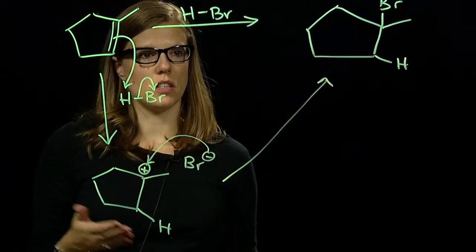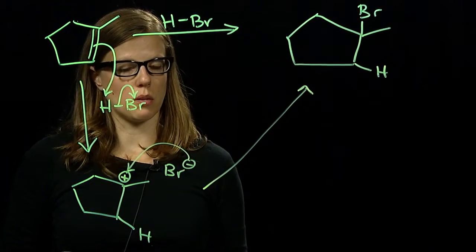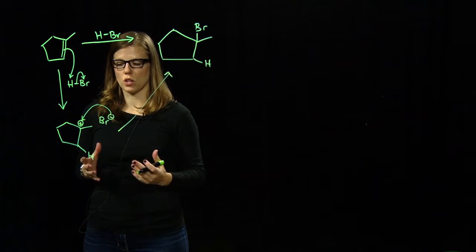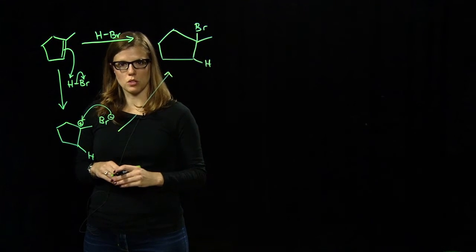So we have a regioselective addition of HBR across the double bond going through a carbocation. You can have rearrangements if you have other substitution on the ring.